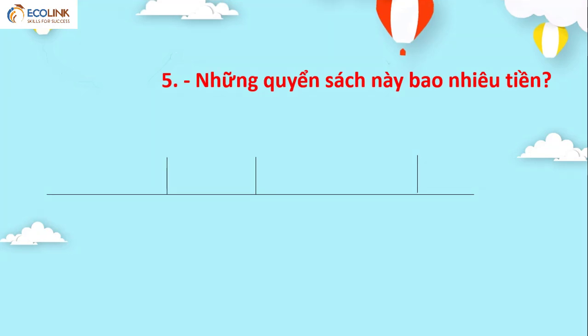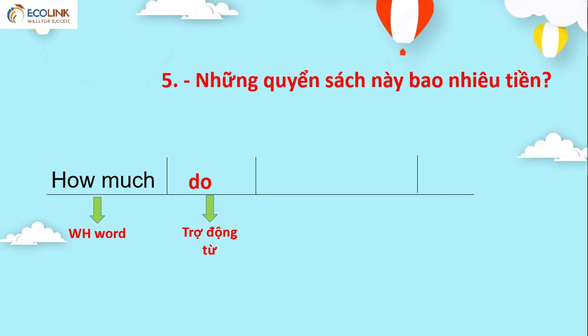Vậy ta có: How much do the books cost? Số nhiều thì mình phải dùng trợ động từ 'do'. How much do the books cost?